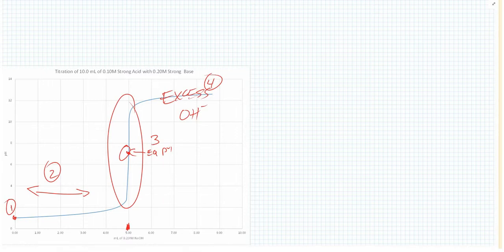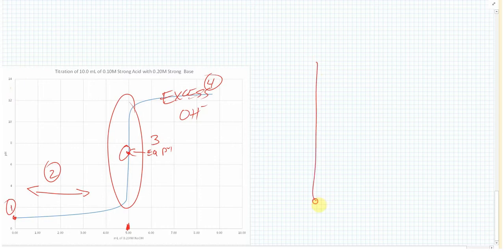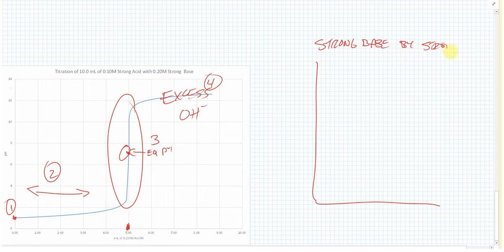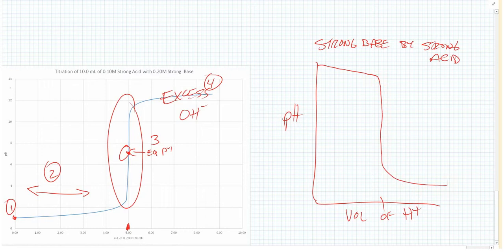If we were to do a strong base titrated by a strong acid, things would just be flipped — we'd start at a high pH and go down to a low pH. So for sodium hydroxide titrated by a strong acid, the curve would have the same shape but inverted, with the same equivalence point pH of 7.